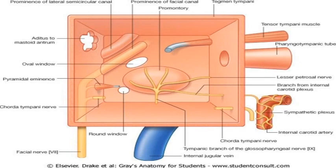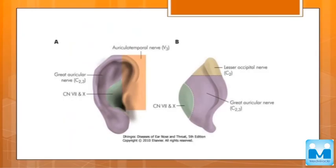This is the three-dimensional image of the medial wall cavity, adopted from Gray's Anatomy. This is the nerve supply of pinna which I was talking about — you have to be thorough with this image. There is no way you can escape it.